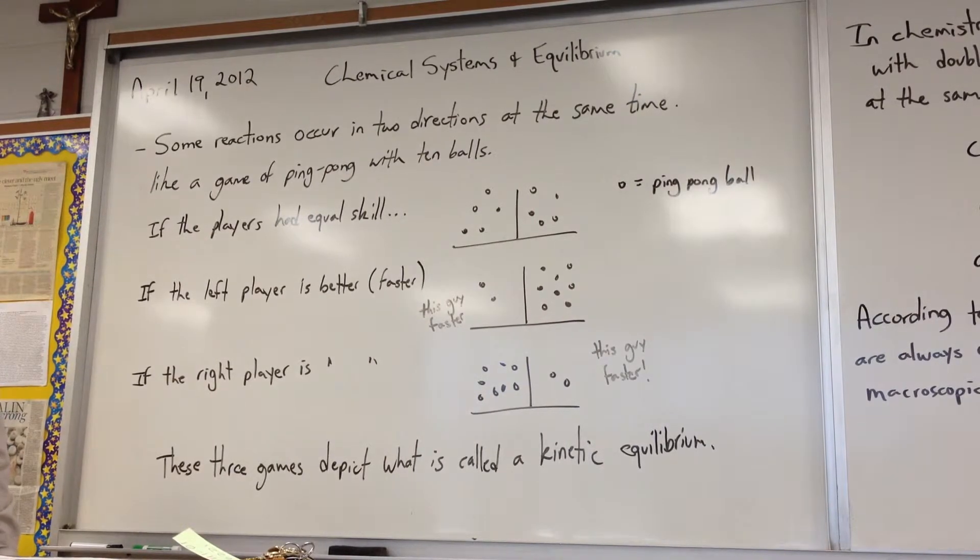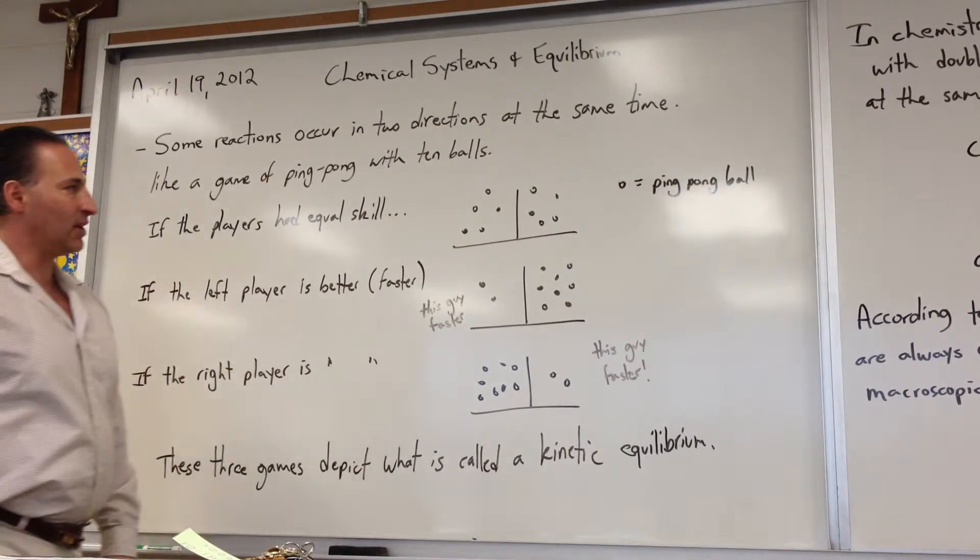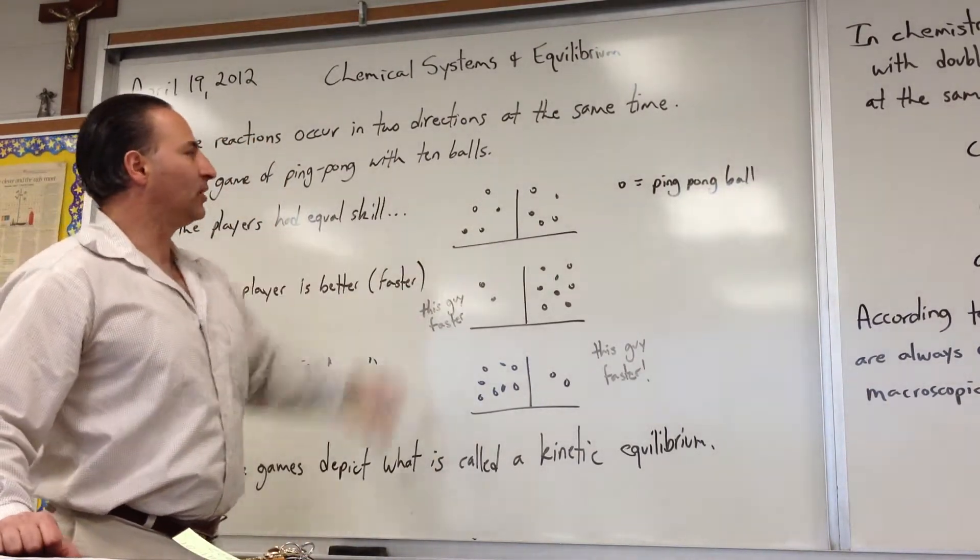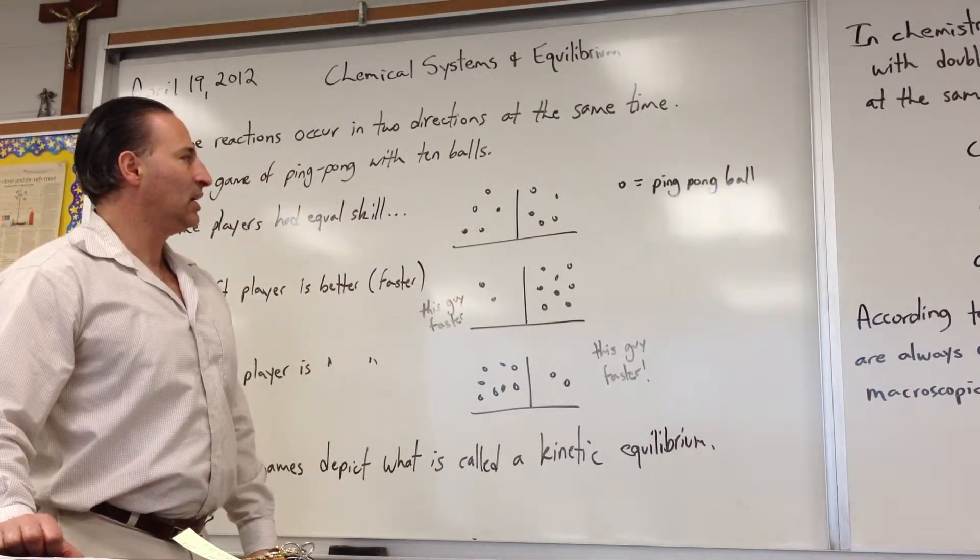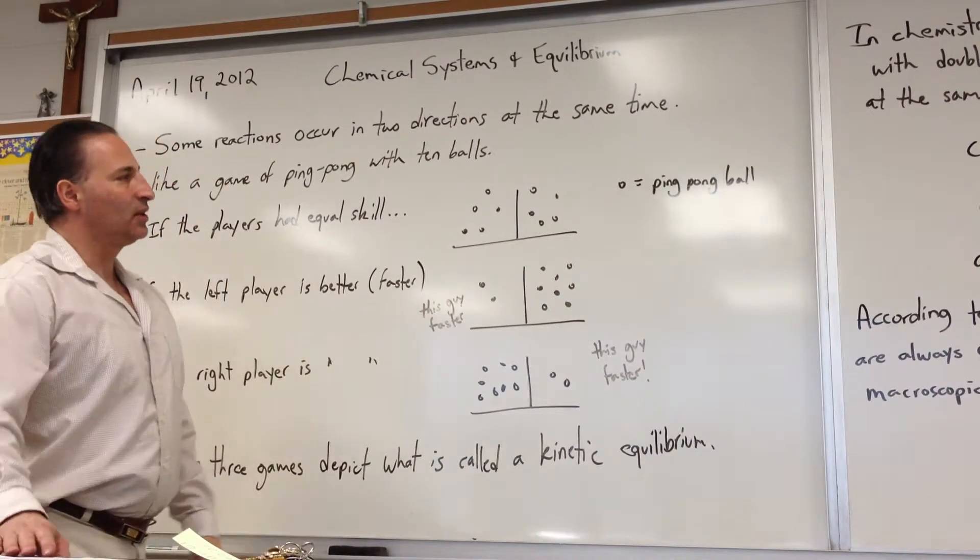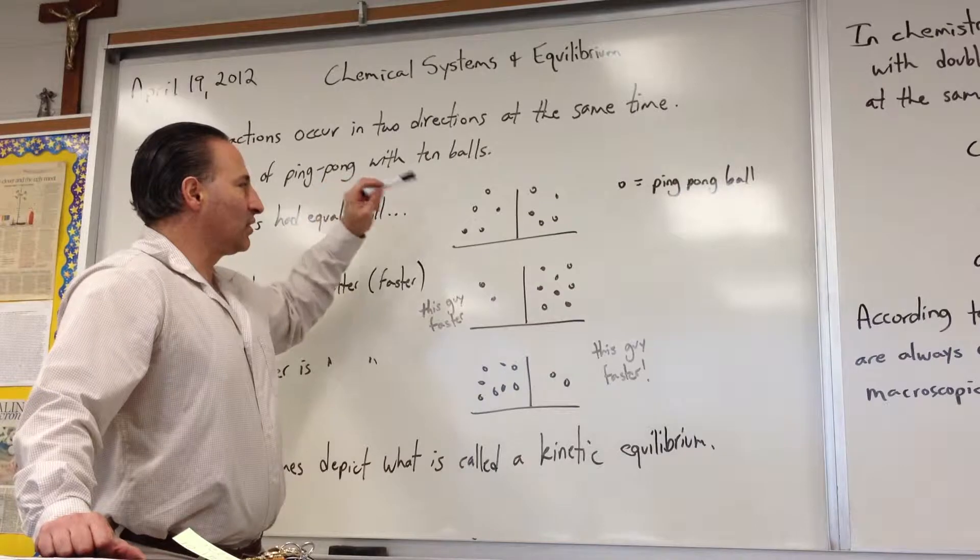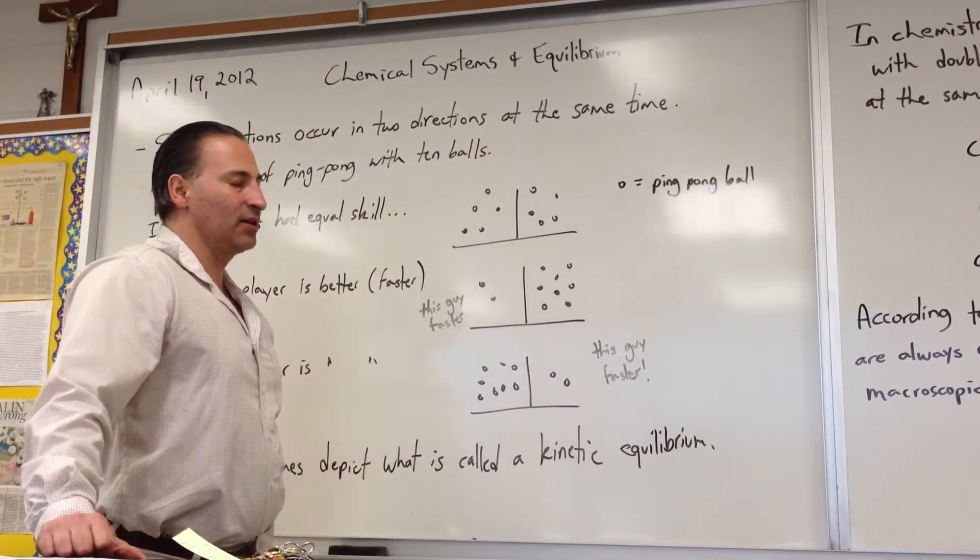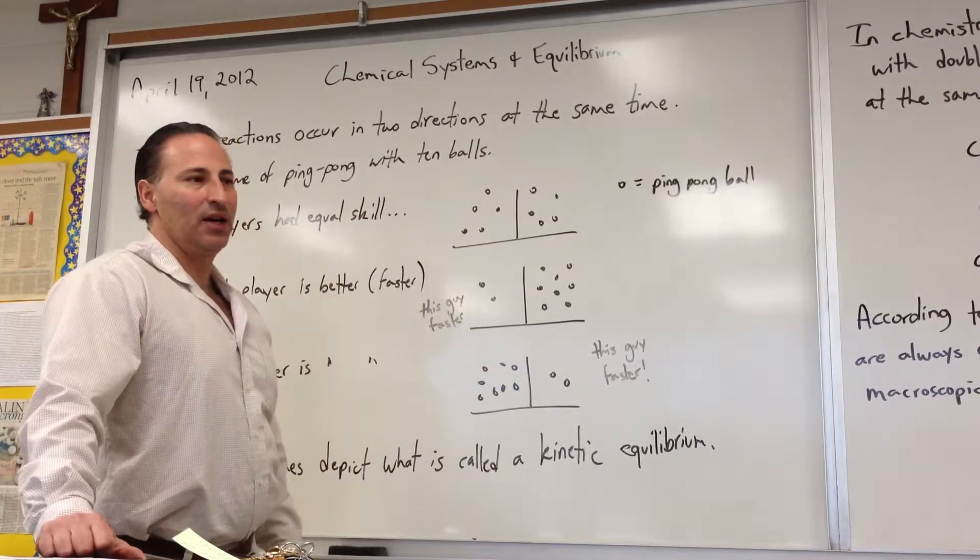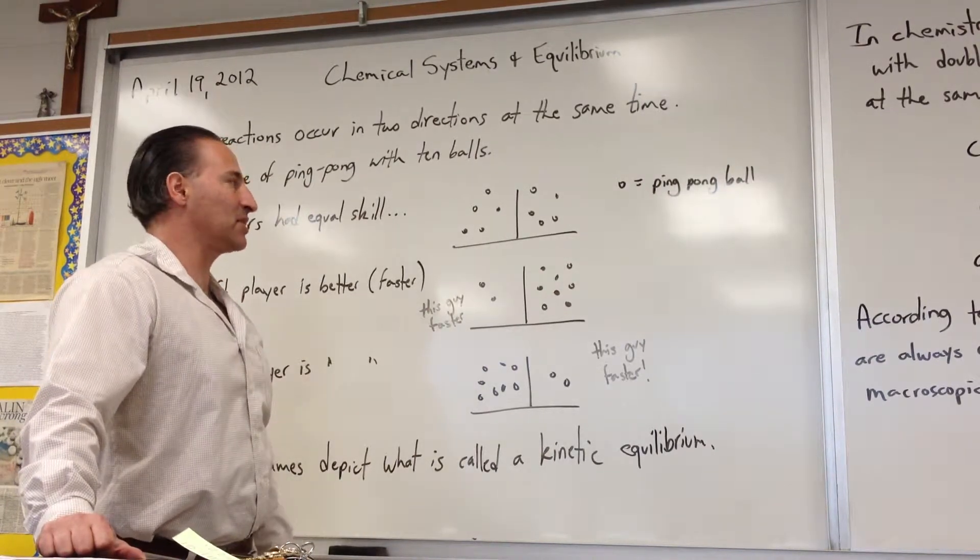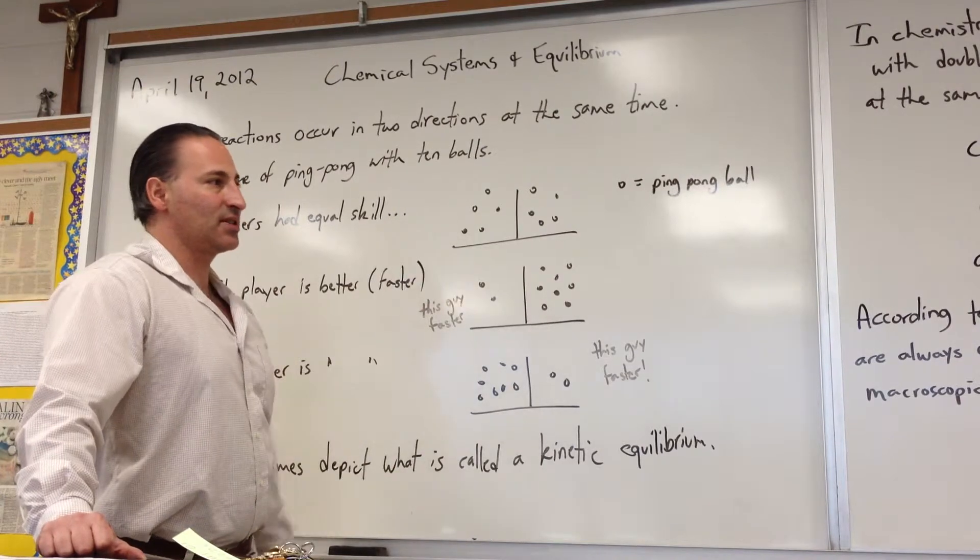One good analogy we can use to help explain this idea is a ping pong game, where at the outset you have two players of equal skill playing with ten ping pong balls on the table. If the two players are of equal skill, at any given moment if you were to take a snapshot of the game, you would see that there are five balls in play on one side and five balls on the other side. If they have the same skill, they can both return the balls at the same rate.